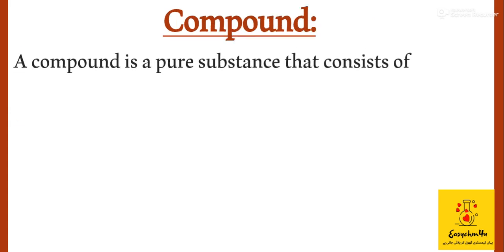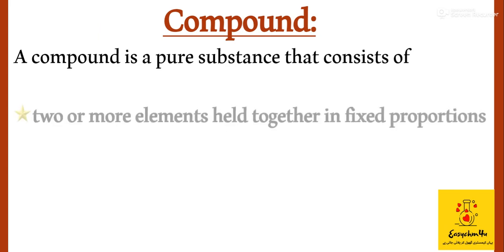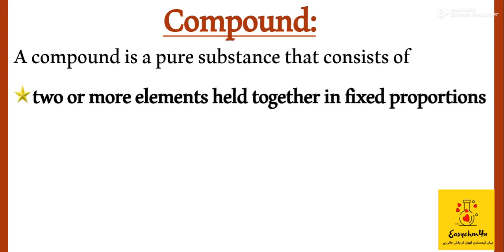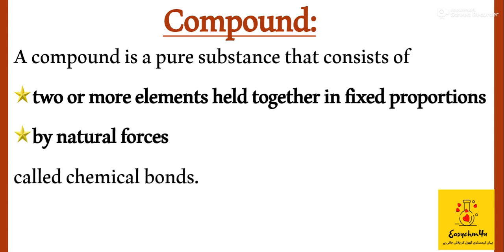The next definition is compound. A compound is a pure substance that consists of two or more elements held together in a fixed proportion by natural forces called chemical bonds. From this definition, we understand that a pure substance will be made with two or more elements.